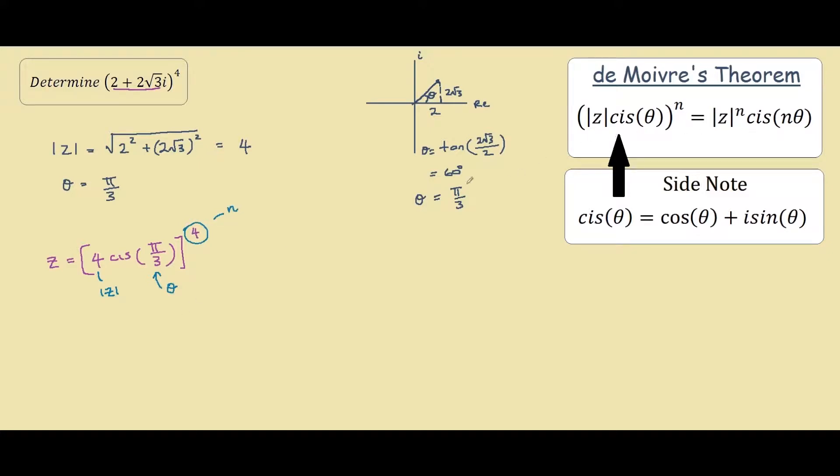So following the theorem, all we do is say that z equals 4 raised to the power of n, which is also 4, cis n which is 4 times theta. So this step was using the theorem.